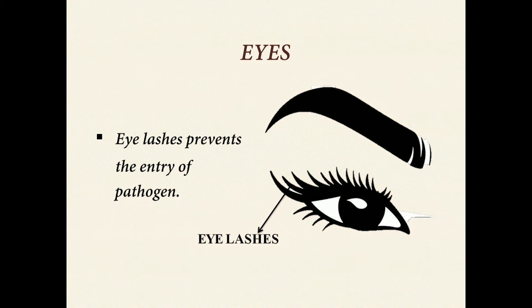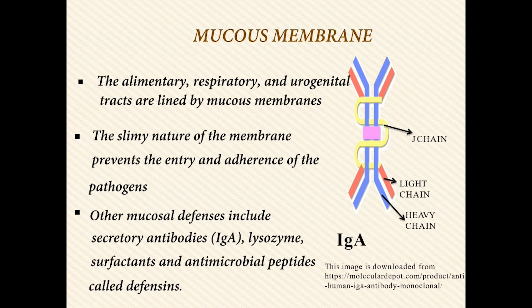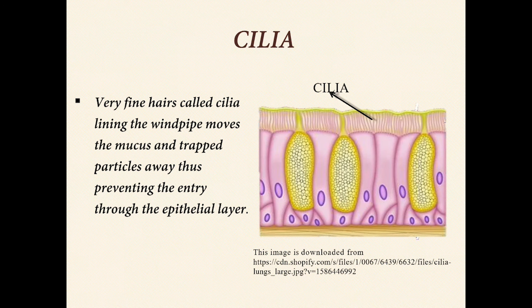Eyes: eyelashes prevent the entry of pathogens. Mucous membranes: the alimentary, respiratory, and urogenital tracts are lined by mucous membranes. The slimy nature of the membrane prevents the entry and adherence of pathogens. Other mucous defenses include secretory antibodies such as IgA, lysozyme, surfactants, and antimicrobial peptides called defensins. Very fine hairs called cilia lining the windpipe move mucus and trapped particles away, preventing entry through the epithelial layer.